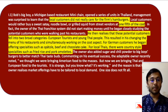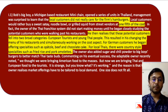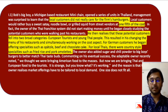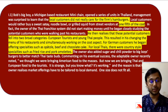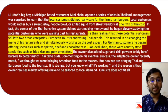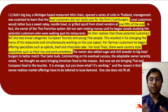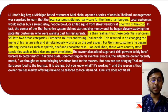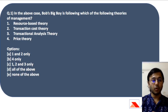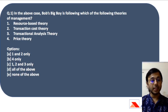The case study is about Bob's Big Boy. We have already read about this restaurant mini-chain case study and I am here again to discuss it. We will be taking another set of questions based on this case. You can pause the video, go through the case study again, and understand why I have highlighted some keywords and key sentences, and then we will move forward with the question. The question is: in the above case, Bob's Big Boy is following which of the following theories of management?